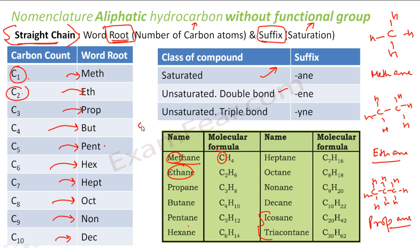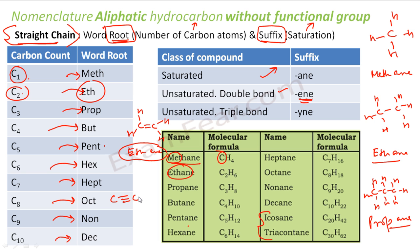Let's take an example with a double bond: CH₂=CH₂. How many carbon atoms? Two, so 'eth' is the word root. Is there a double bond? Yes — the suffix for double bond is '-ene'. So it is ethene. Now let's take one with a triple bond: CH≡CH. Again two carbons, so 'eth'. Triple bond suffix is '-yne'. So it is ethyne.